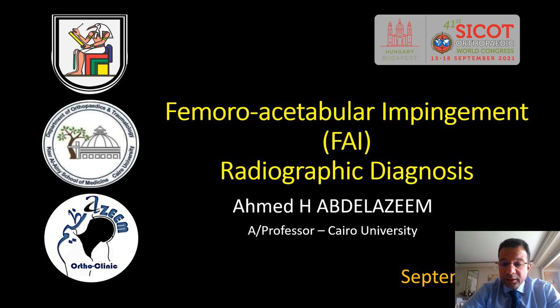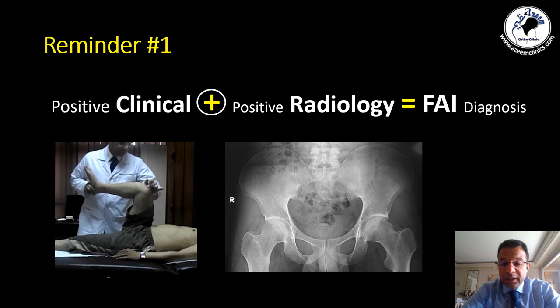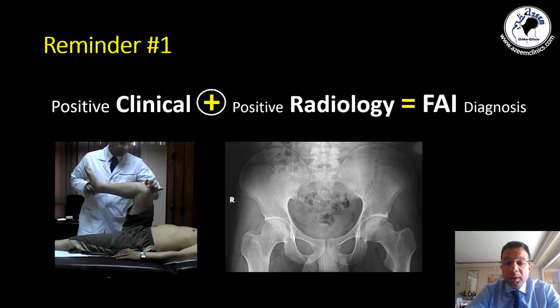Today we will speak about the radiographic diagnosis of femoroacetabular impingement. Before starting, I have to remind you of three points. The first point is that the diagnosis of femoroacetabular impingement needs positive clinical findings as well as positive radiographic findings. Finding positive clinical findings alone is not enough, and finding positive radiographic findings alone is not enough. You have to find both positive for a proper diagnosis.